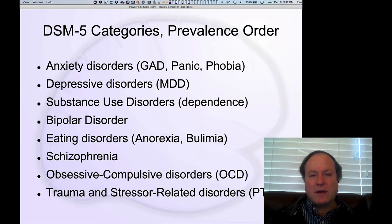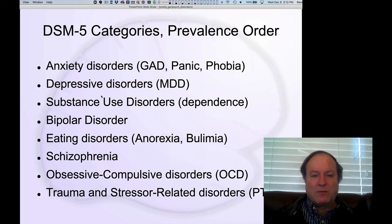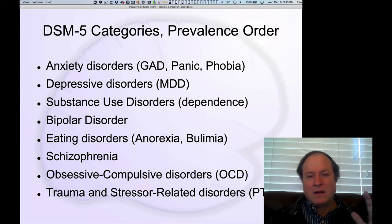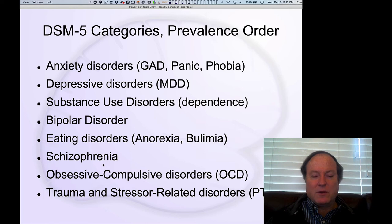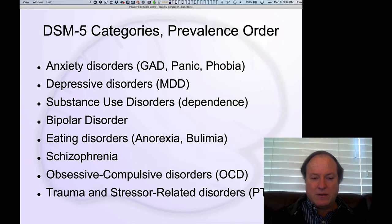One of the big controversies is the very existence of these categories — what do they mean, are they real, what's their utility? Setting that aside, the major categories include: anxiety disorders (generalized anxiety disorder, panic, and phobia); depressive disorders (major depressive disorder); substance use disorders (addiction/dependence); bipolar disorder; and then less than one percent prevalence — eating disorders (anorexia and bulimia); schizophrenia, perhaps the most prototypical case; obsessive-compulsive disorder (OCD); and trauma and stressor-related disorders (PTSD). We'll go through each and discuss defining characteristics and treatments.